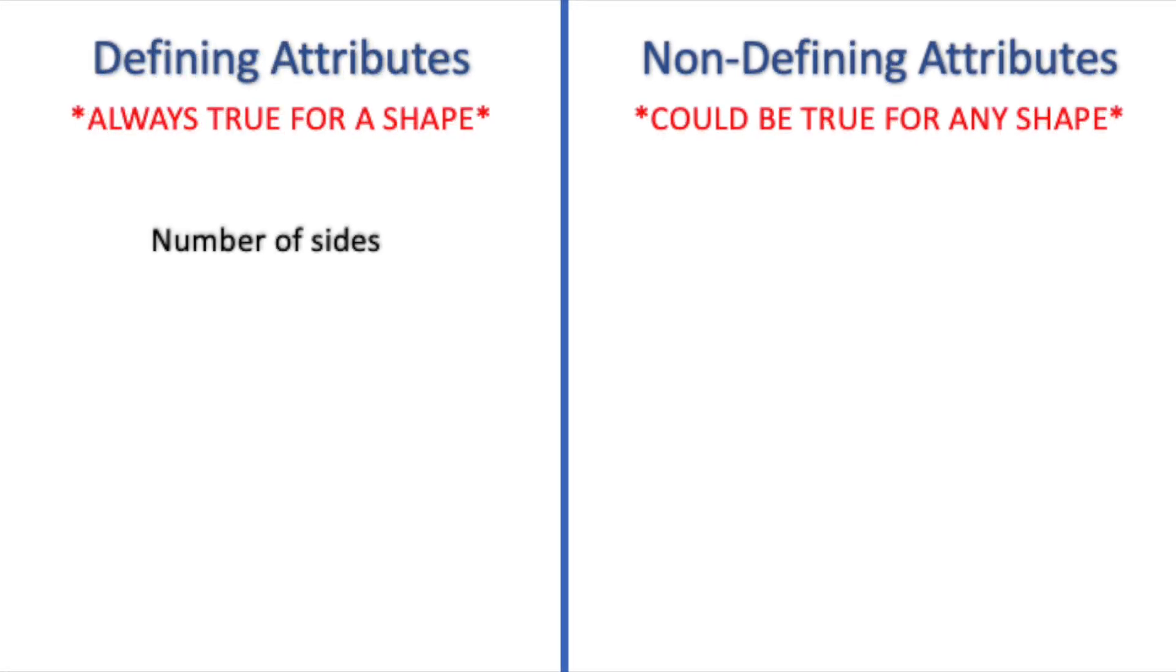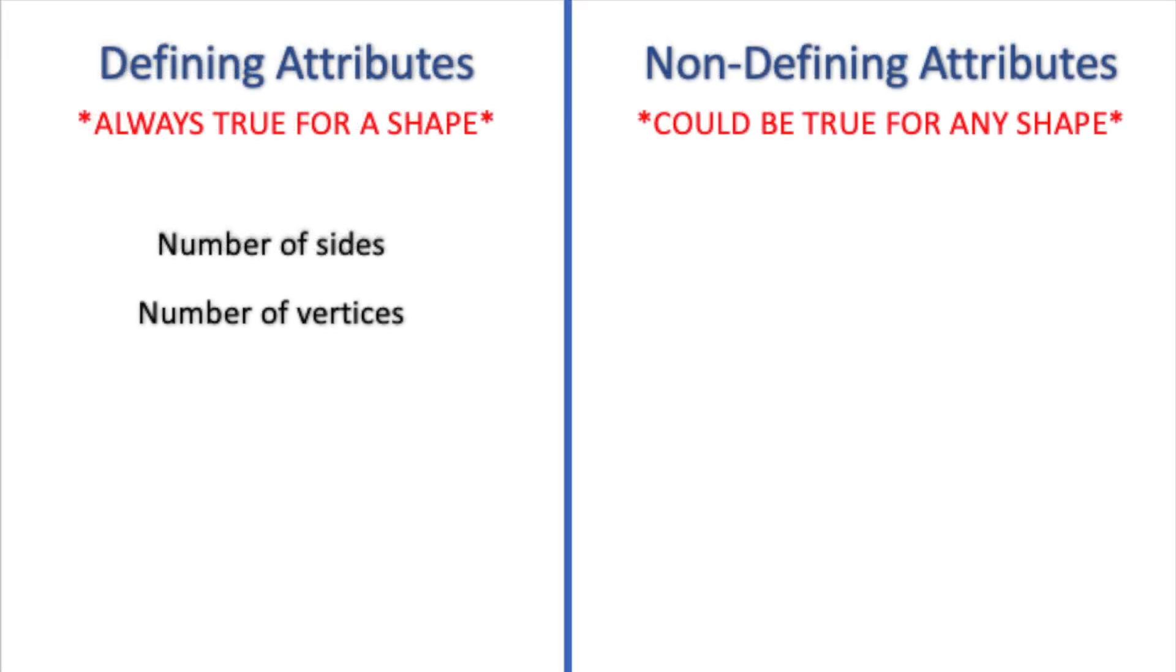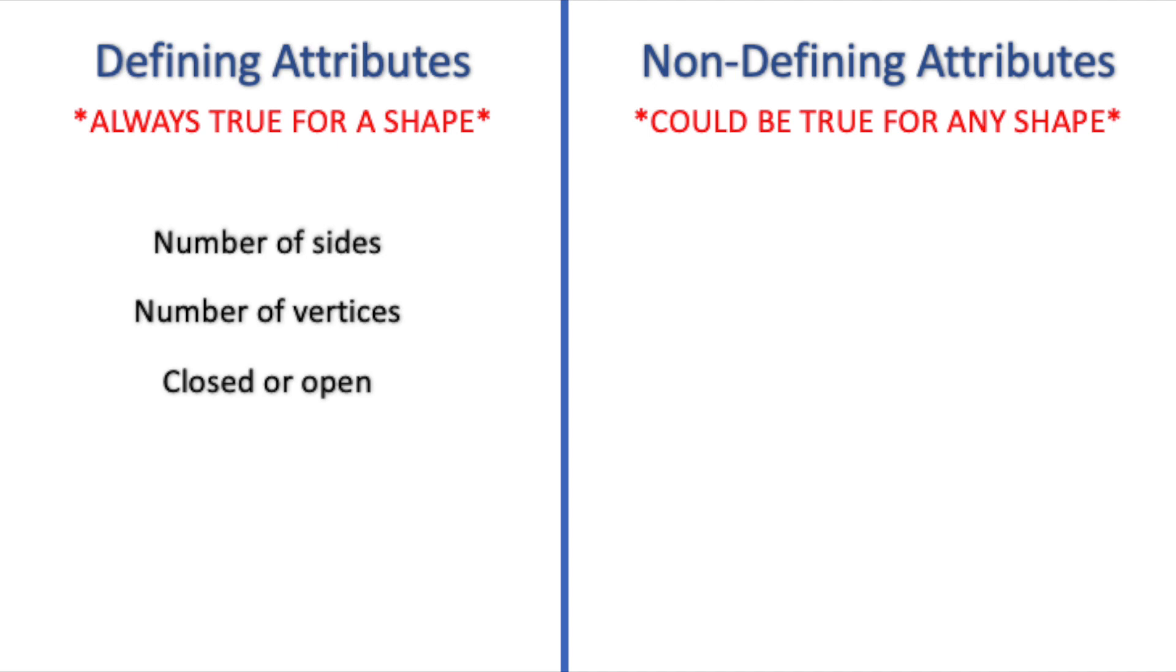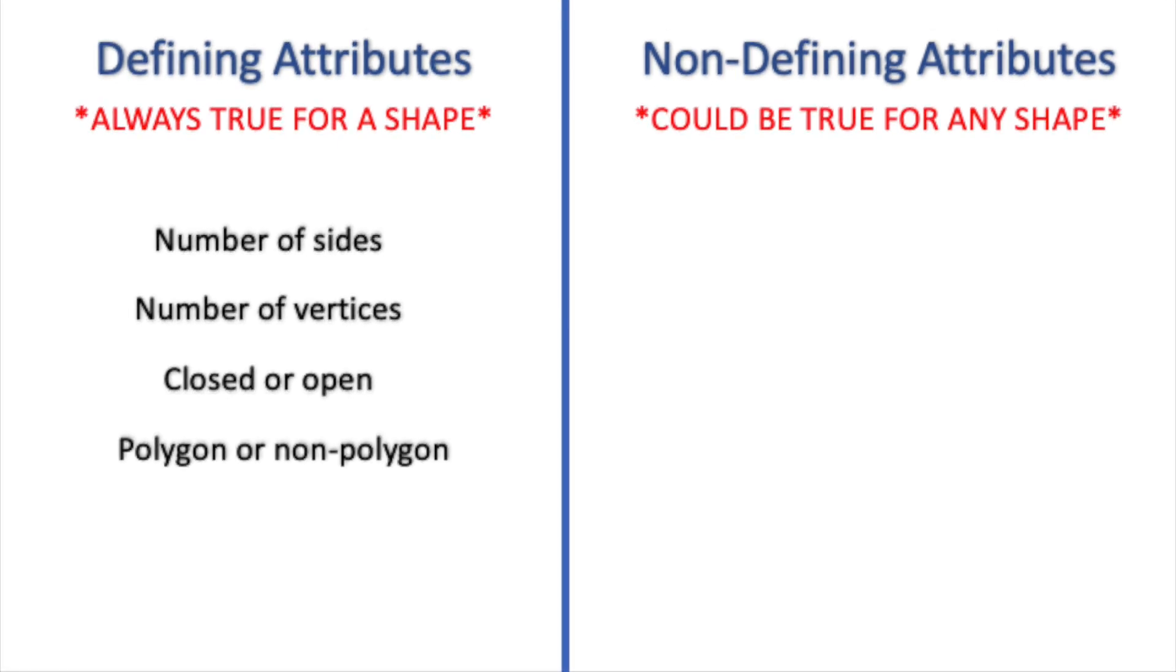Defining attributes are facts such as the number of sides, the number of vertices, whether a shape is closed or open, and if it is a polygon or a non-polygon.